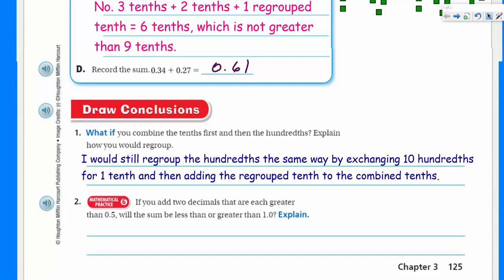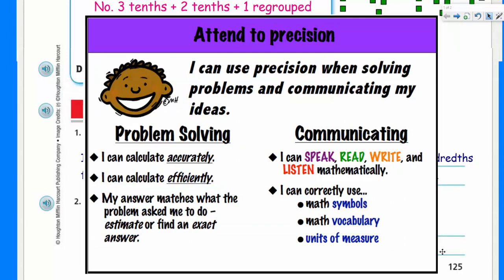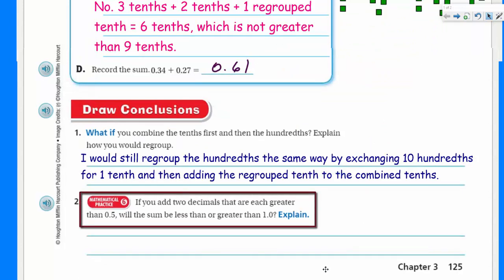Next we have mathematical practice 6, attend to precision. The importance of problem solving and calculating accurately and efficiently, making sure my answer matches up with what I'm asked to do. If you add two decimals that are each greater than 5 tenths, will the sum be less than or greater than one whole? The sum will definitely be greater than 1.0. If it's greater than a half, it's like taking a half and a half, because 5 tenths plus 5 tenths is equal to one whole.